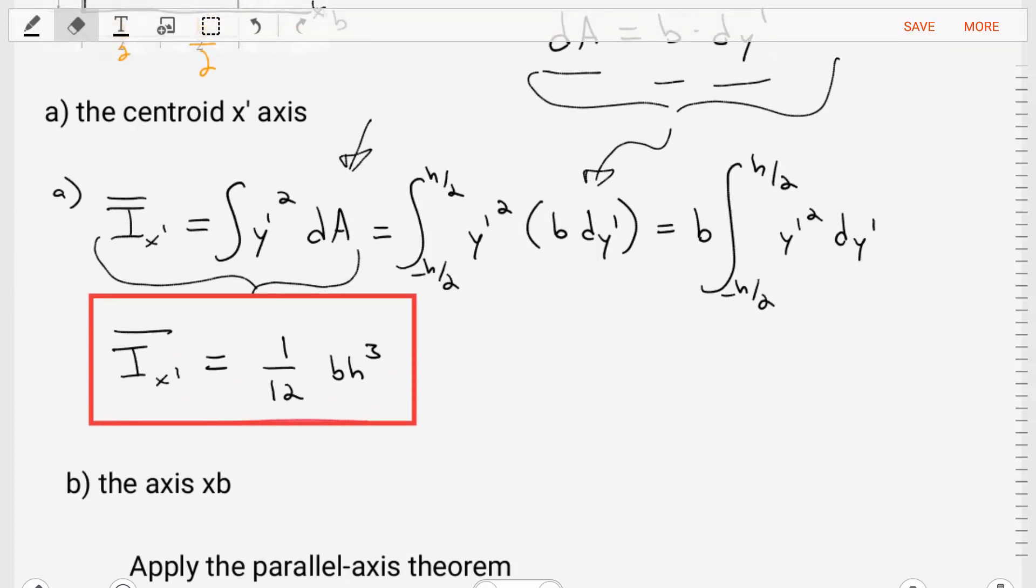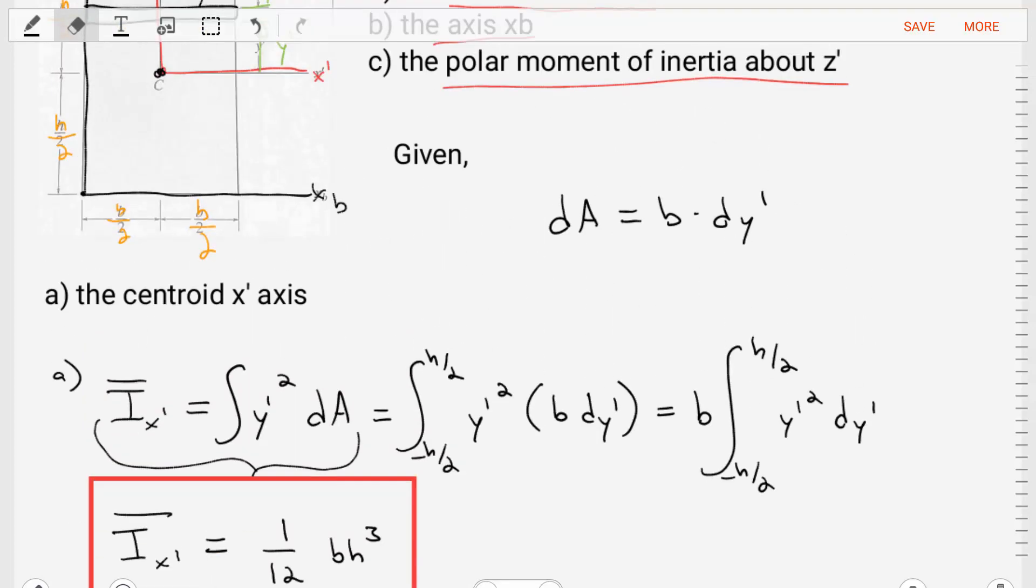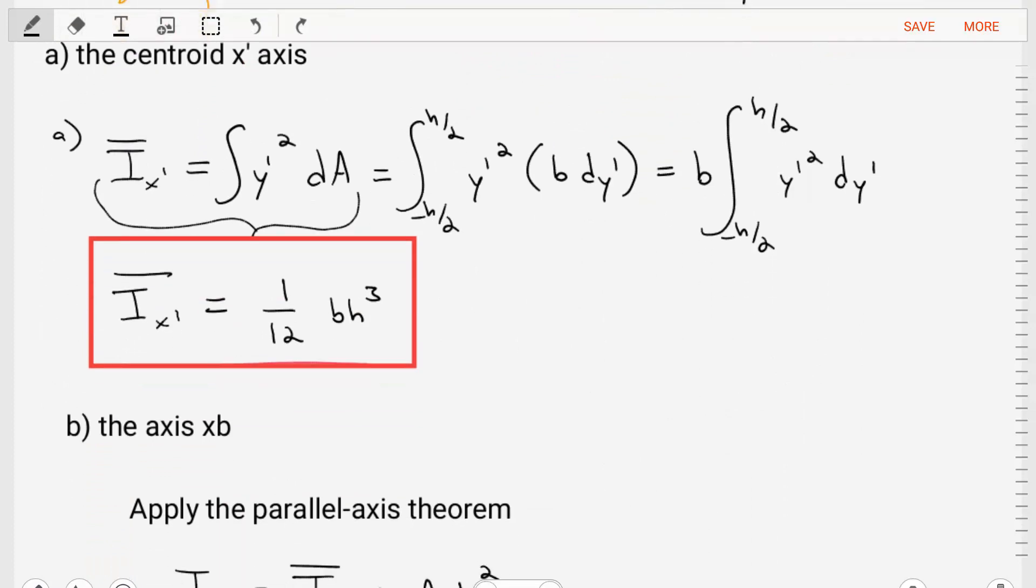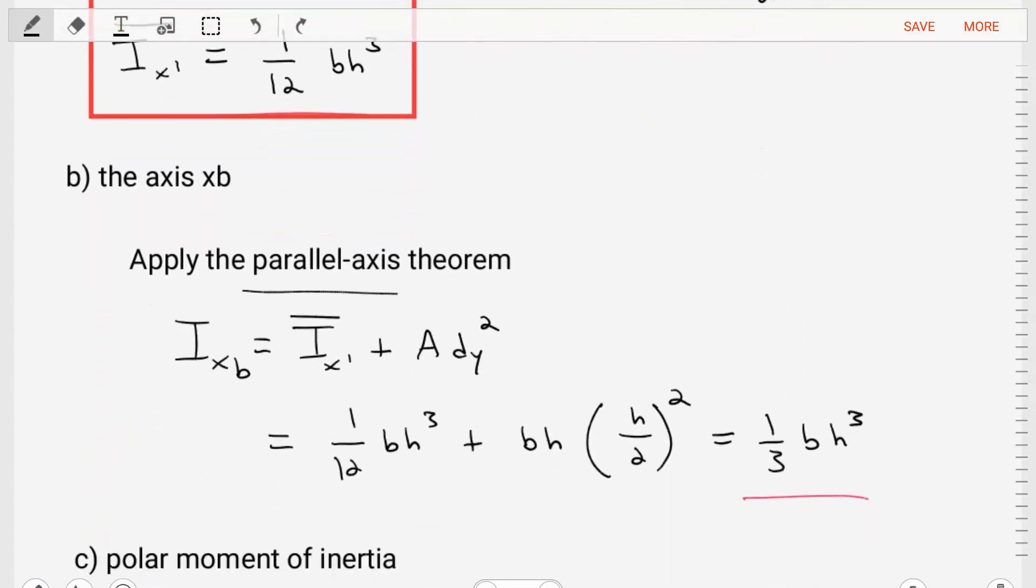Now let's try part B, which is a little more challenging. In part B, we're asked to find what is the area moment of inertia about the xb-axes. In this case, we'll need to apply the parallel-axes theorem, because the moment of inertia, we tend to want to find that from the centroid. And if we're not acting at the centroid, if we're not acting at x-prime, we need to make a modification. And that's where the parallel-axis theorem comes in.